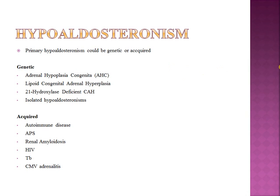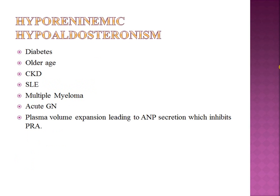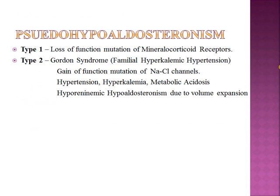Primary hypoaldosteronism can be genetic — such as adrenal hypoplasia congenita, lipoid congenital adrenal hyperplasia, and 21-hydroxylase deficiency — or acquired. In developed countries, the most common acquired cause is autoimmune disease; in developing countries, tuberculosis is believed to be most common. Other causes include antiphospholipid antibody syndrome, renal amyloidosis, HIV, tuberculosis, and CMV adrenalitis. Hyporeninemic hypoaldosteronism is a form of secondary hypoaldosteronism seen with diabetes, old age, chronic kidney disease (stage 4 and beyond), lupus, multiple myeloma, and acute glomerulonephritis.